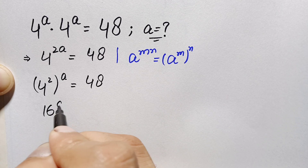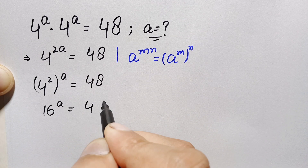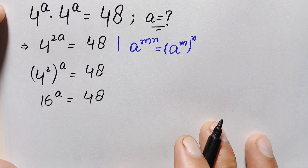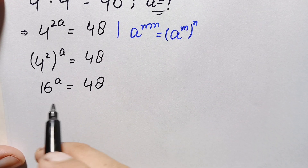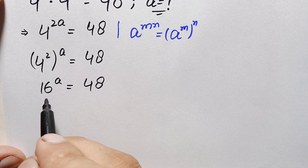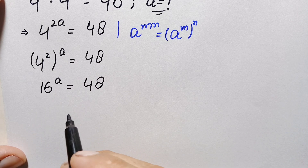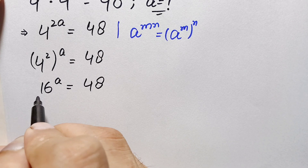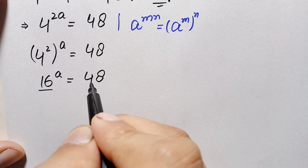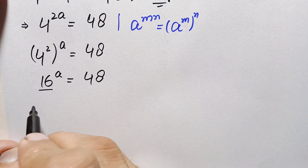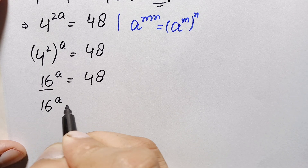What is 4 raised to power 2? It is simply 16. So this becomes 16 raised to power a equal to 48. We can take the common log on both sides, but we can also divide both sides by 16, since 16 and 48 are both divisible by 16.